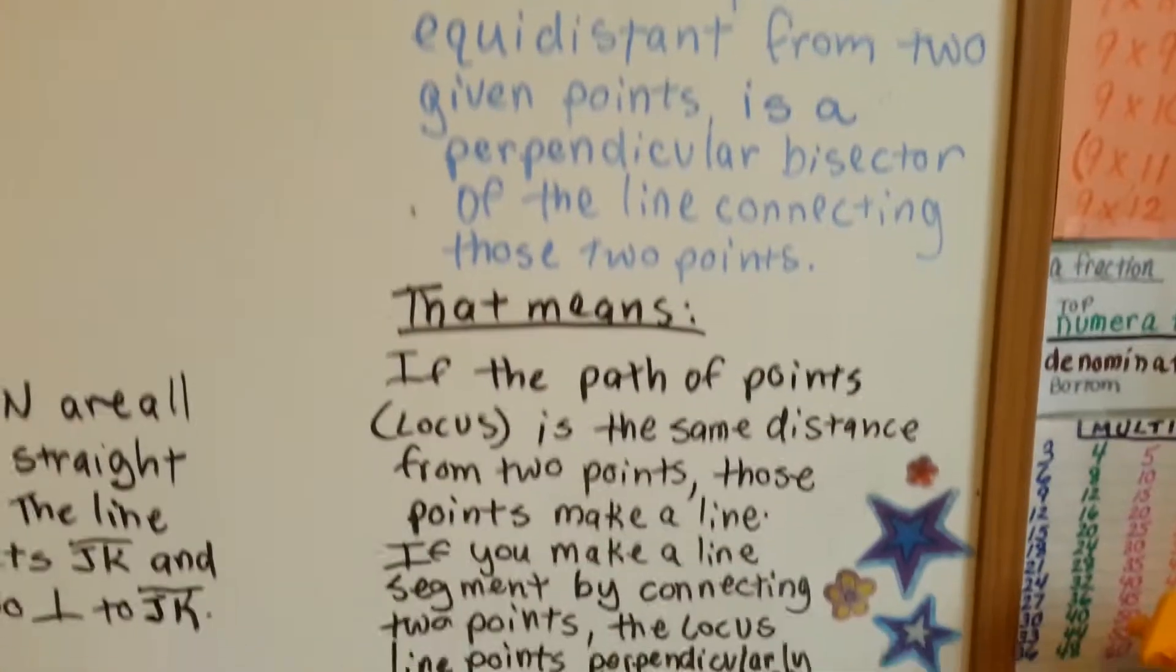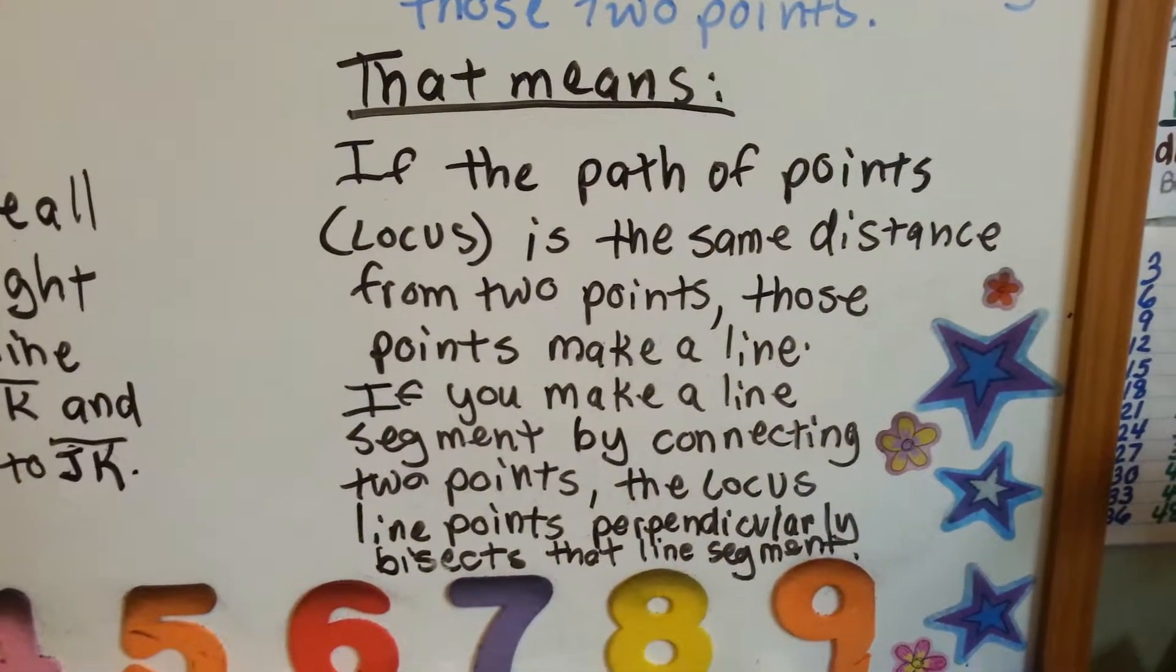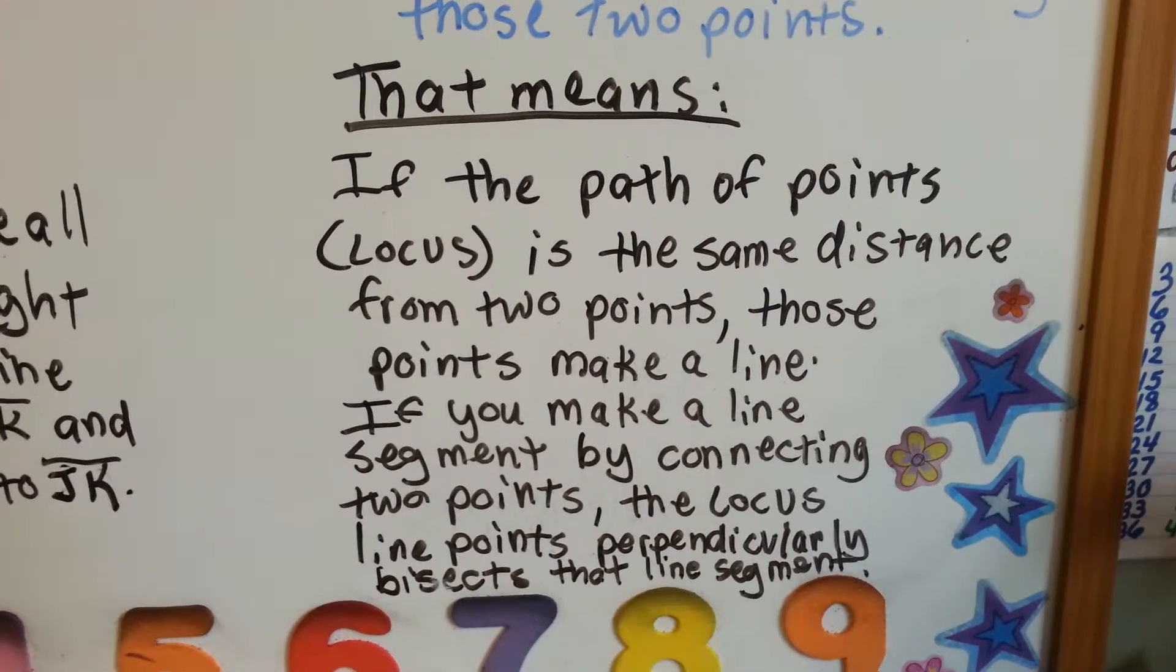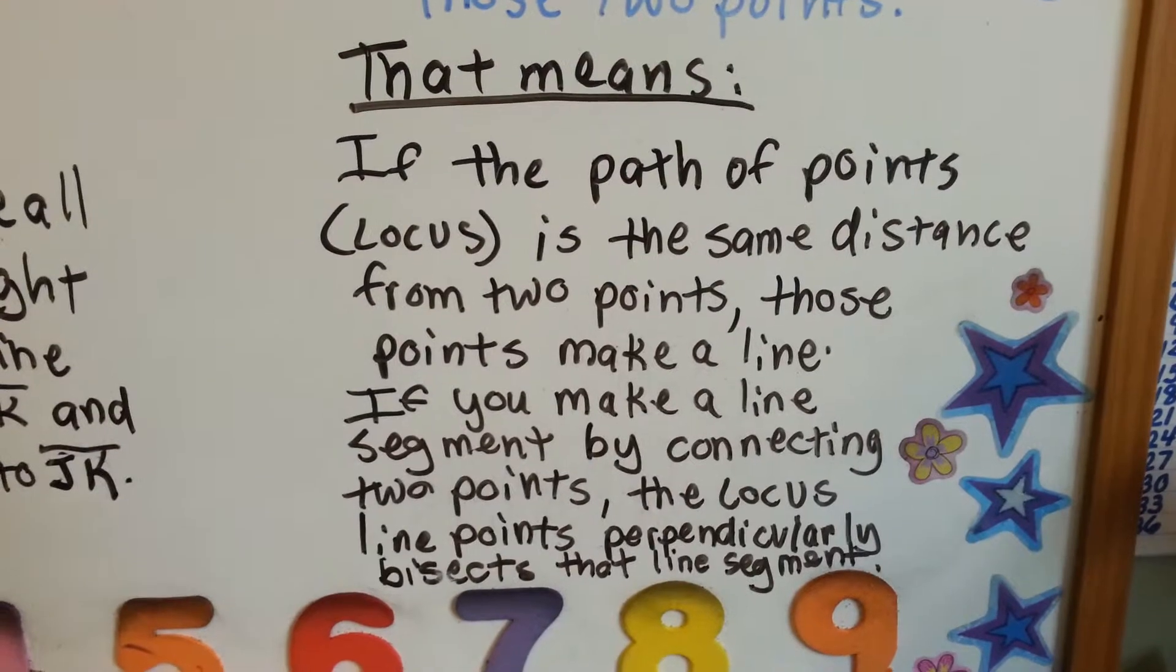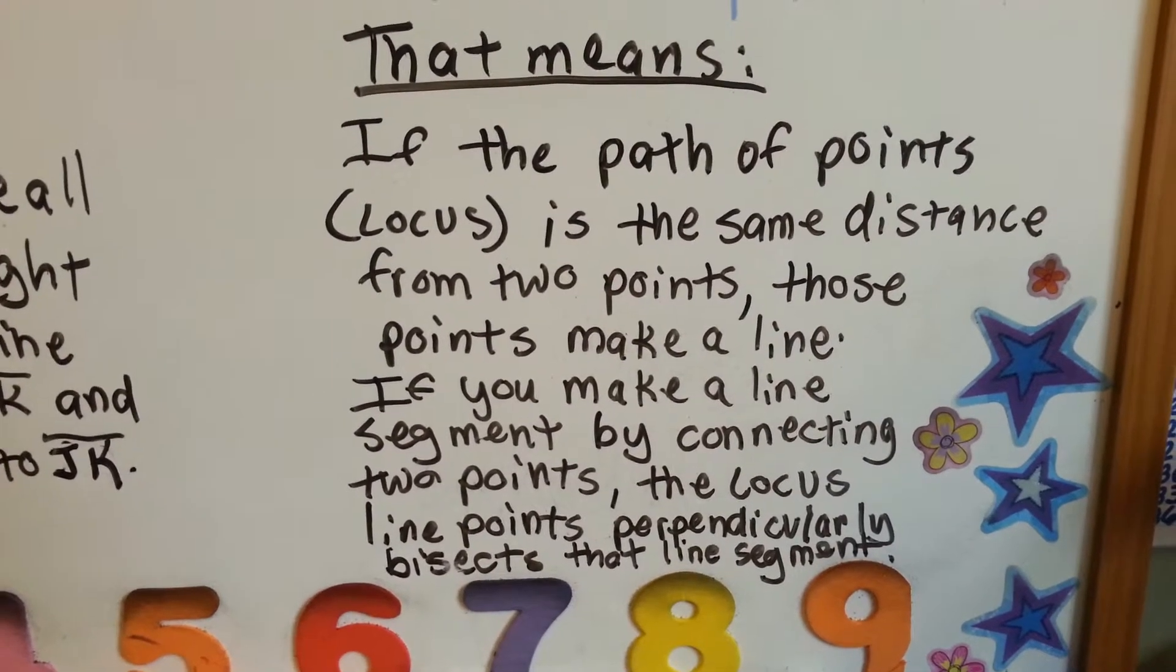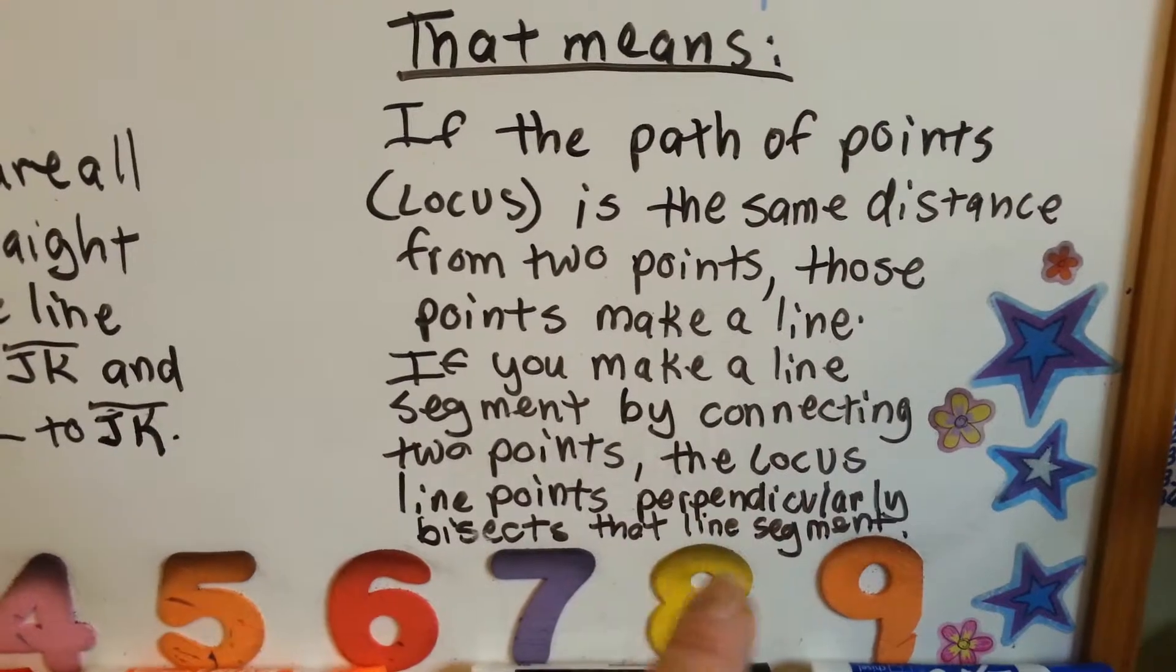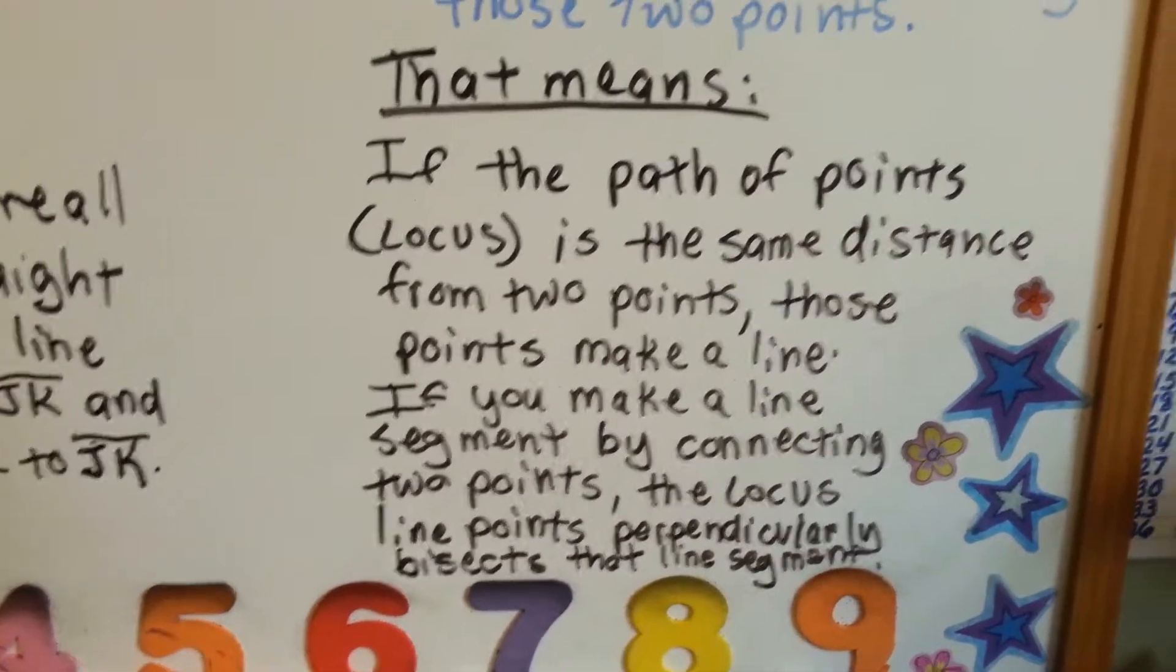That means if the path of points, the locus, is the same distance from two points, those points make a line. If you make a line segment by connecting two points, the locus line points perpendicular bisects that line segment. So, the line points of the locus will perpendicularly bisect that line segment.